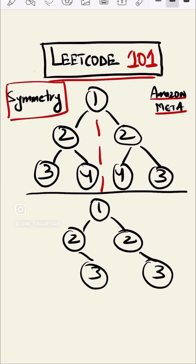If we put a mirror here, then the left of this node should be equal to the right of this node. If we check this node, the left of this node should be equal to the right of this node, and the right of this node should be equal to the left of this node.